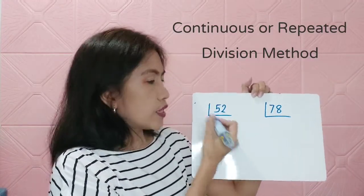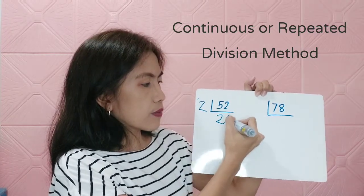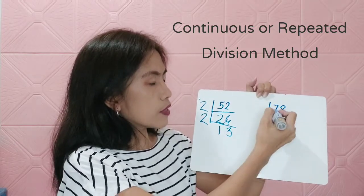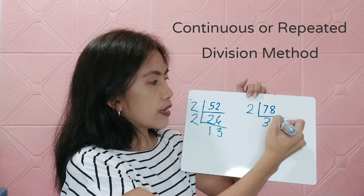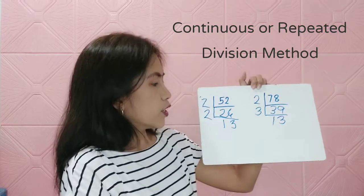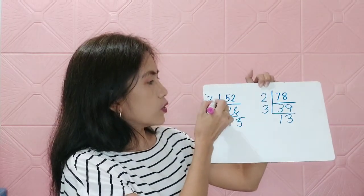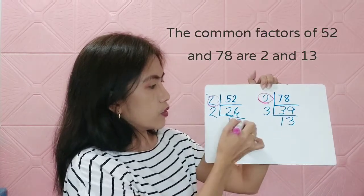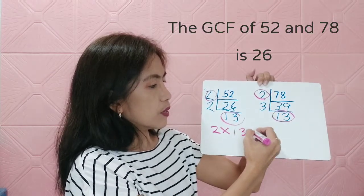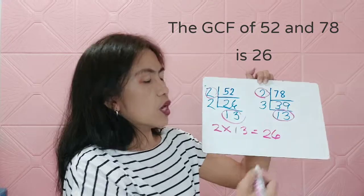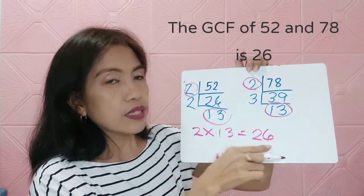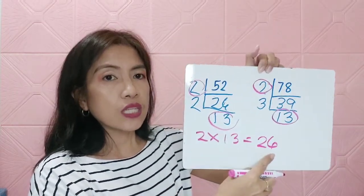For 52 and 78 using continuous division: dividing by 2 gives 26 and 39. Then dividing 39 by 3 gives 13. The common divisors are 2 and 13, so 2 × 13 = 26. Therefore, the greatest common factor of 52 and 78 is 26.